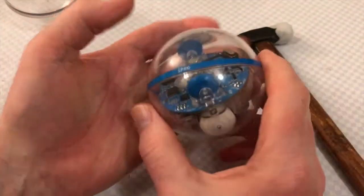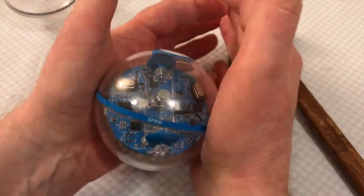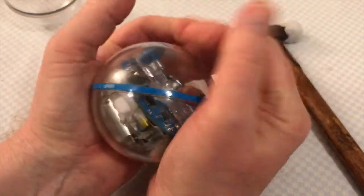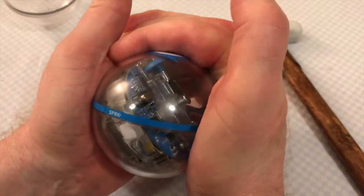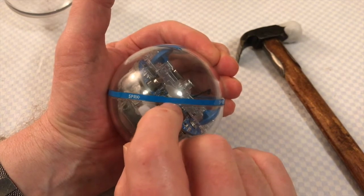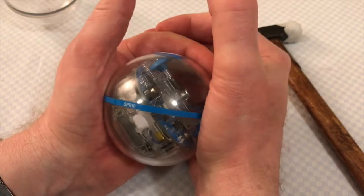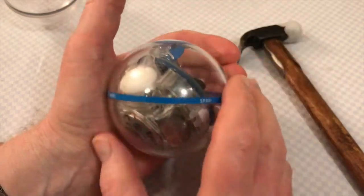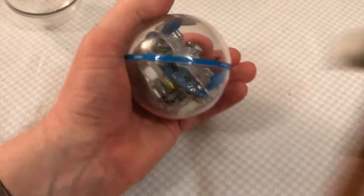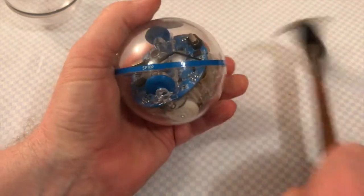Once you begin to get a difference in tone, what you then do is put the Sphero between your hands and push and just gently move it around. Don't do it too hard. What you're looking for is a gap forming between the blue line and the plastic ridge. You'll get a gap appearing. Once you get that gap appearing, then you want to start working that gap a bit, and then pressing again, and then again working it round.